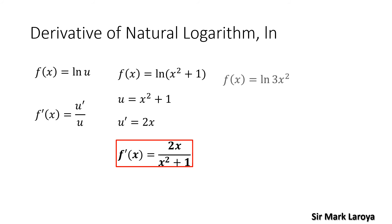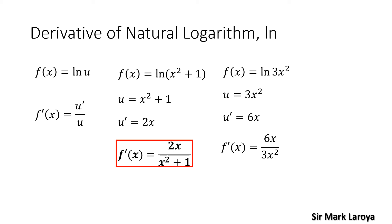For another example, let's say we have f(x) = ln(3x²), where our u is 3x squared. So u prime will be 6x. Applying the formula, f'(x) = 6x all over 3x squared. Simplifying this, 6 divided by 3 gives 2, and the x in the numerator cancels with one x in the denominator, so this becomes f'(x) = 2 over x.